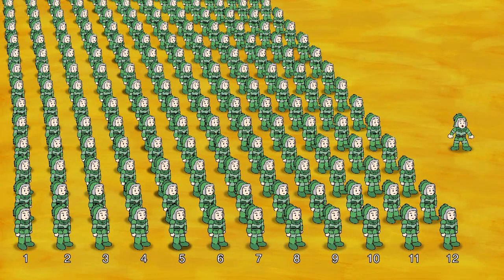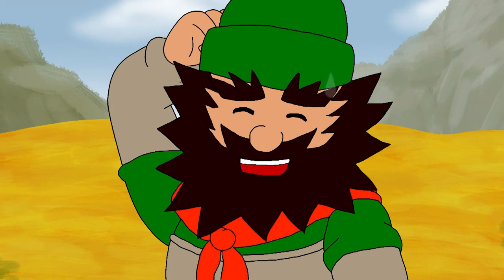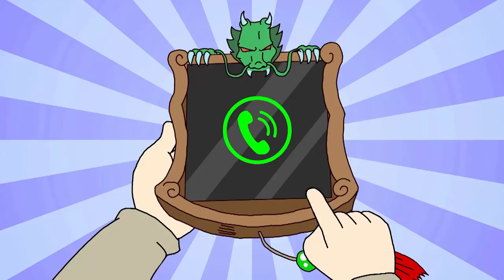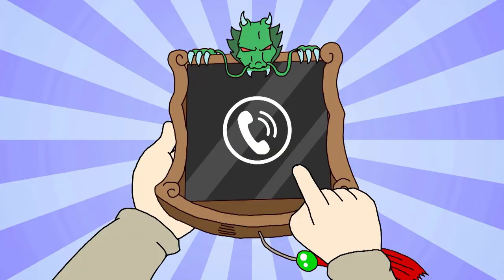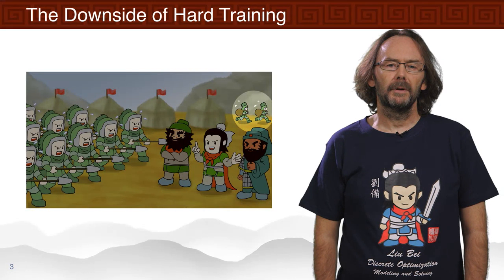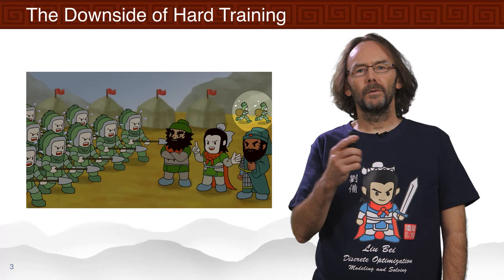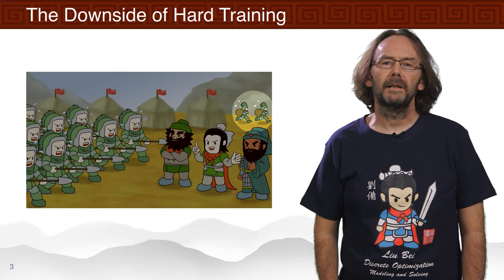Zhengfei could not work out the number of soldiers using these three arrangements, so Liu Bei took out the magical tablet to see whether it could help. Preparing the army to take on the yellow turban rebels is hard work and not all of their soldiers are up for it, so some of them are running away. Our heroes would like to know how many they have left.